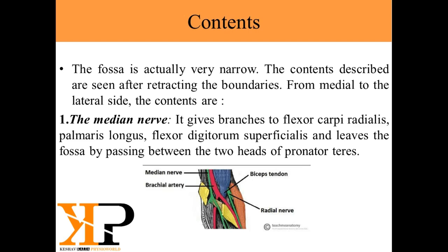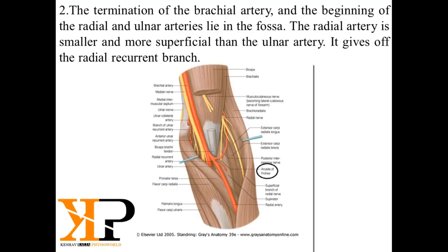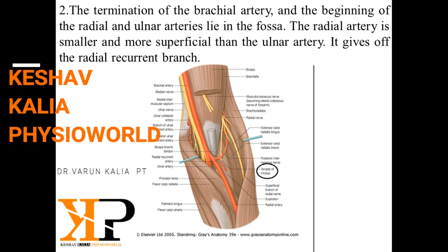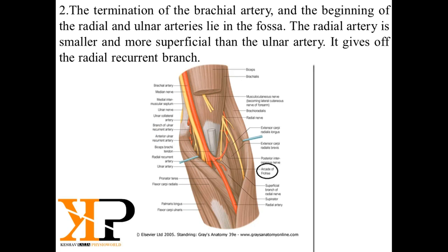The termination of the brachial artery and the beginning of the radial and ulnar arteries lies in the fossa. In the arm we have the brachial artery, and when the brachial artery enters the cubital fossa, it divides into the radial artery and the ulnar artery.